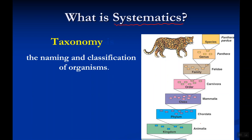You might already be familiar with this system from grade school: kingdom, phylum, class, order, family, genus, and species. These are different taxa — different classification groups — going from largest to smallest. Your teacher may have used a mnemonic to help you remember the order. My favorite was 'Kings play chess on fat girls' stomachs.'